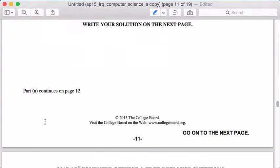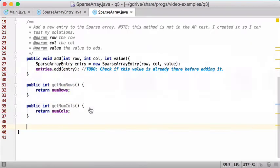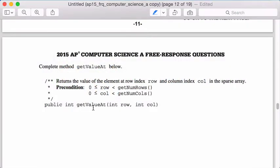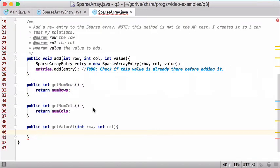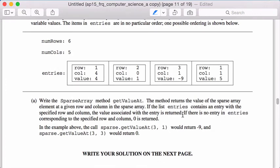What they're asking us to do is we have to implement the getValue method. Public int getValue, int row, int col. What we need to do should be pretty obvious - we're gonna go through the entries and check if this is the row and column. If it is, I'm gonna return the value. If it's not, when I get to the end I'm gonna say oh couldn't find it, I'm gonna return a zero.